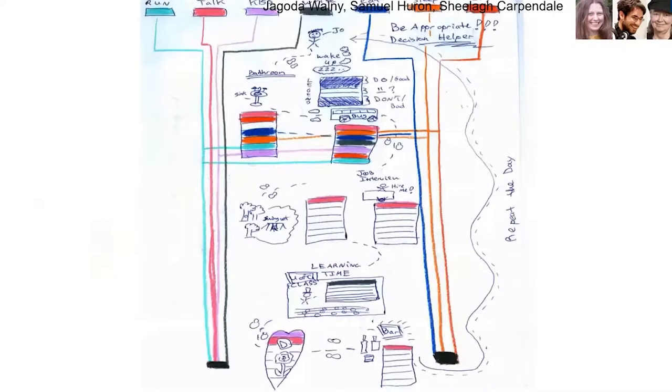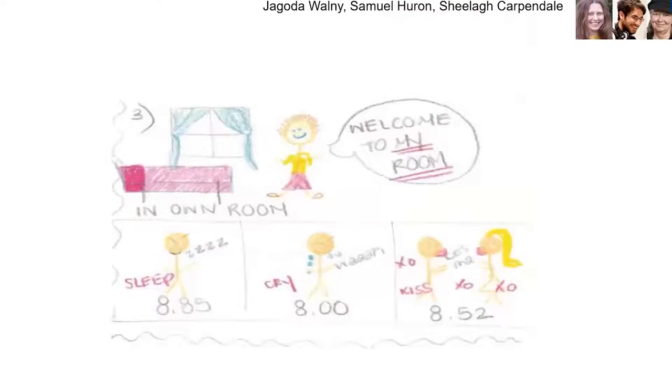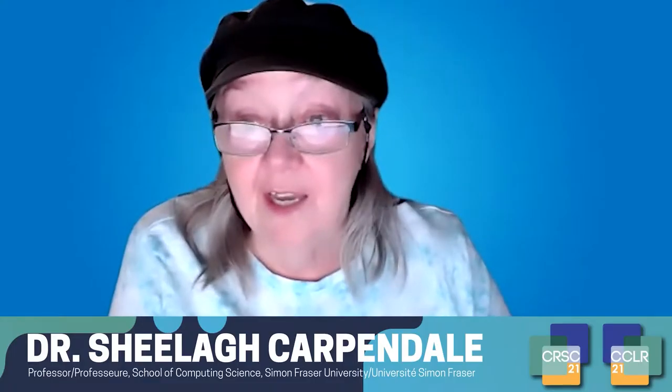Sure enough, lots of them drew us bar charts and tallies and fairly simple types of visualizations, but we also got lots of really personal inventive visualizations. Like this is a 'be appropriate decision helper' about, like, in a given part of the day what they should look up about whether it will be appropriate to behave in one way or another. But people also drew us comic strips.